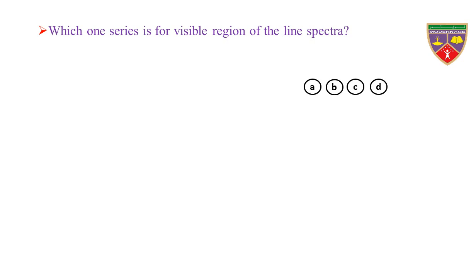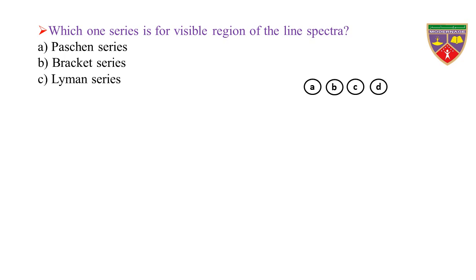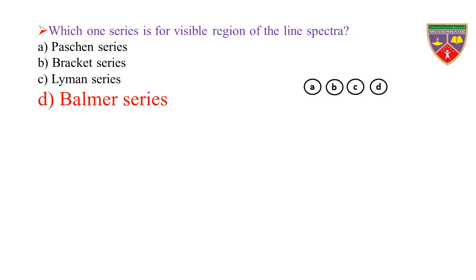Which one series is for the visible region of the line spectrum? Option A, Paschen series; Option B, Brackett series; Option C, Lyman series; Option D, Balmer series. The key is Balmer series. Therefore, the correct option is D.